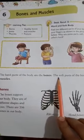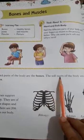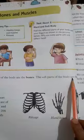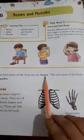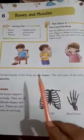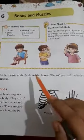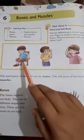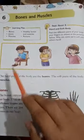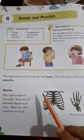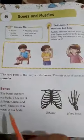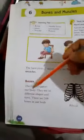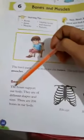The hard parts of our body are the bones, and the soft parts of our body are the muscles. Now, let's first learn about bones.